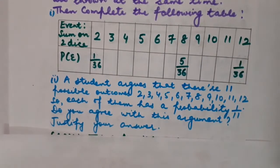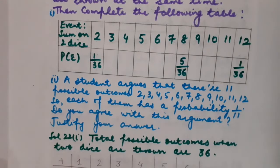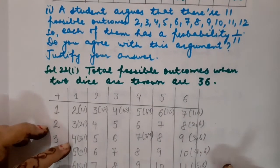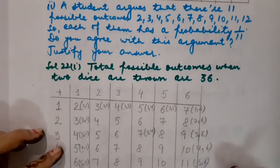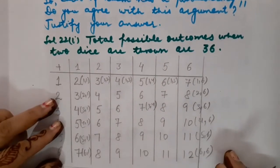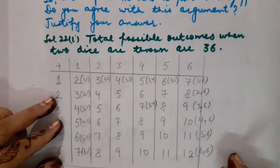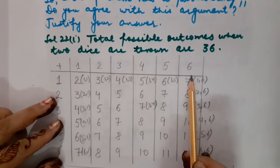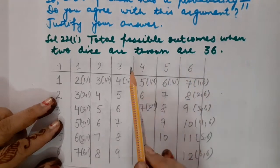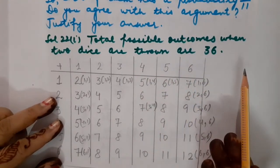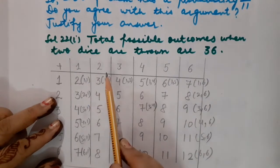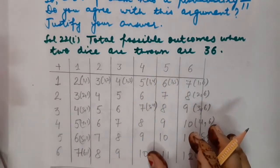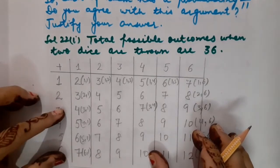Let us have a look at the solution. Whenever the sum or product of two dice is demanded, it is mandatory for every child to form a table. We know that on each die the six numbers are 1 to 6. Sometimes a question specifies different digits written on the dice, in which case we use those digits. But if there is no specification, you use 1 to 6.